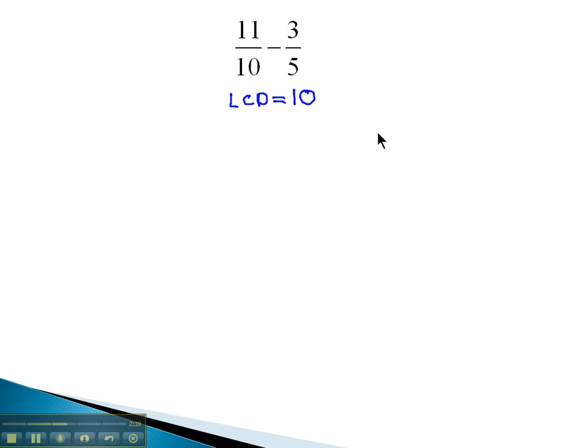Using mental math, we see they both are divisible, or both divide into 10 evenly. The 11 tenths already has that denominator we want.